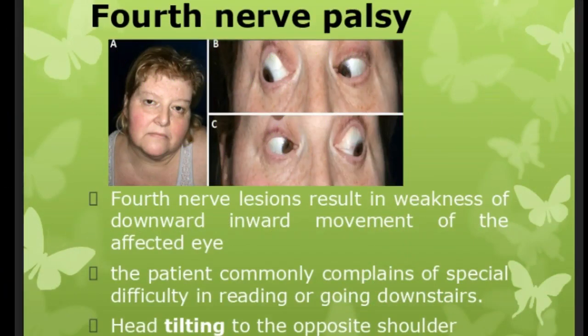Fourth nerve palsy results in extorsion and weakness of downward and inward movement of the affected eye, most marked when the eye is turned inward. The patient commonly complains of difficulty reading or going down stairs. Head tilting to the opposite shoulder is especially characteristic of fourth nerve lesion. This compensatory maneuver causes entorsion of the unaffected eye and ameliorates the double vision.